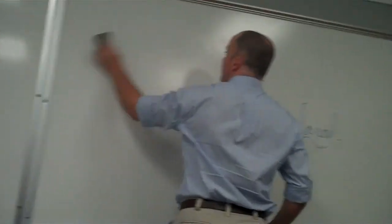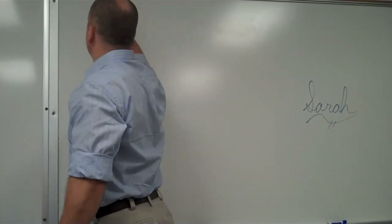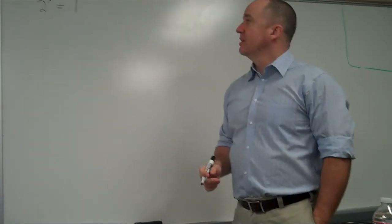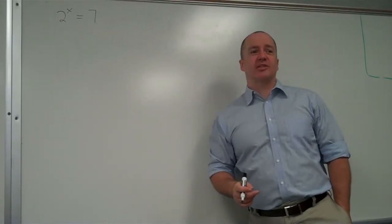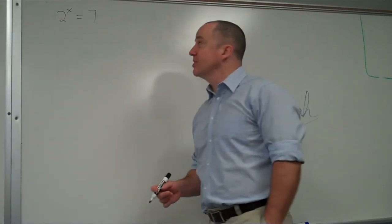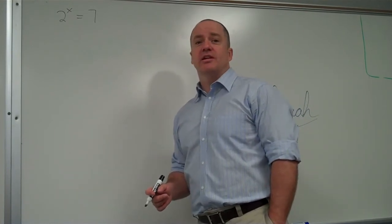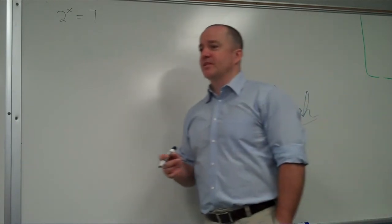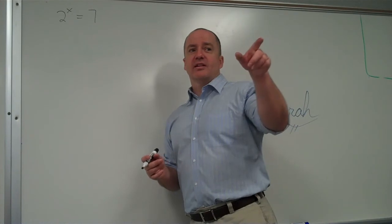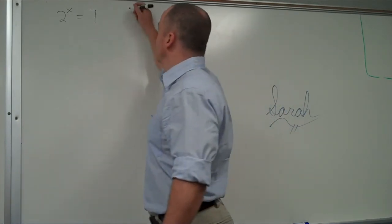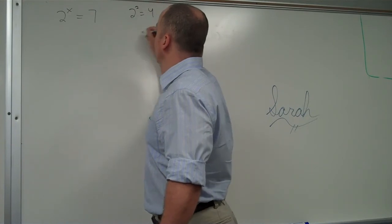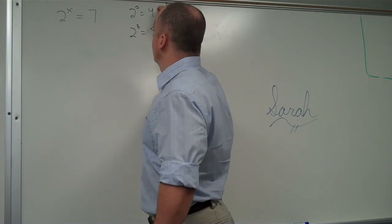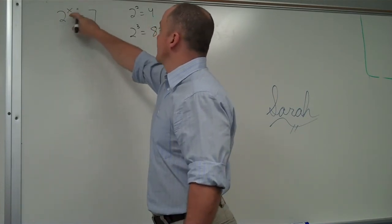Let's do another example of this. If I have 2 to the x equals 7, someone tell me what sort of answer I should expect. How big, how small, in between what two numbers? It's going to be a decimal. I think you're thinking multiplication. It's got to be more than 2 and less than 3. 2 squared is 4. 2 cubed is 8. 7 is between 8 and 4. So 2 to the x. The x must be between 2 and 3.